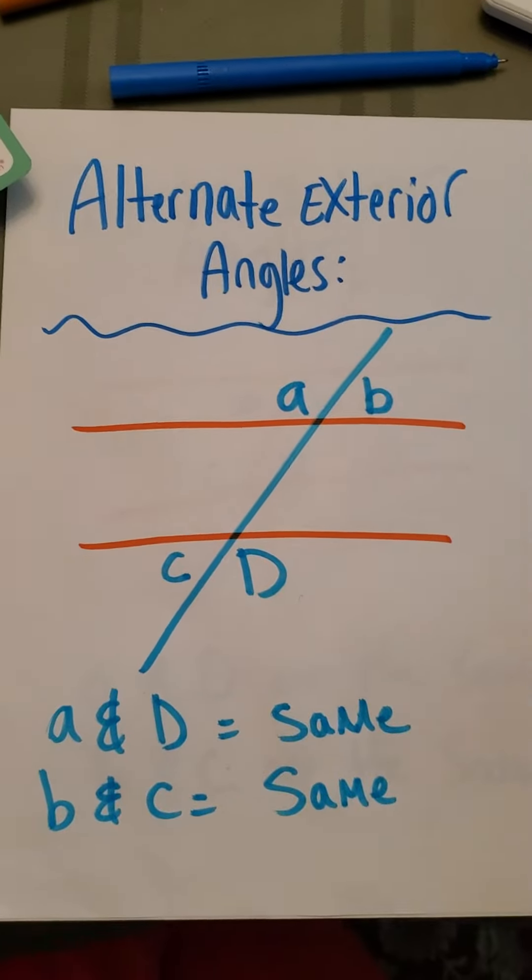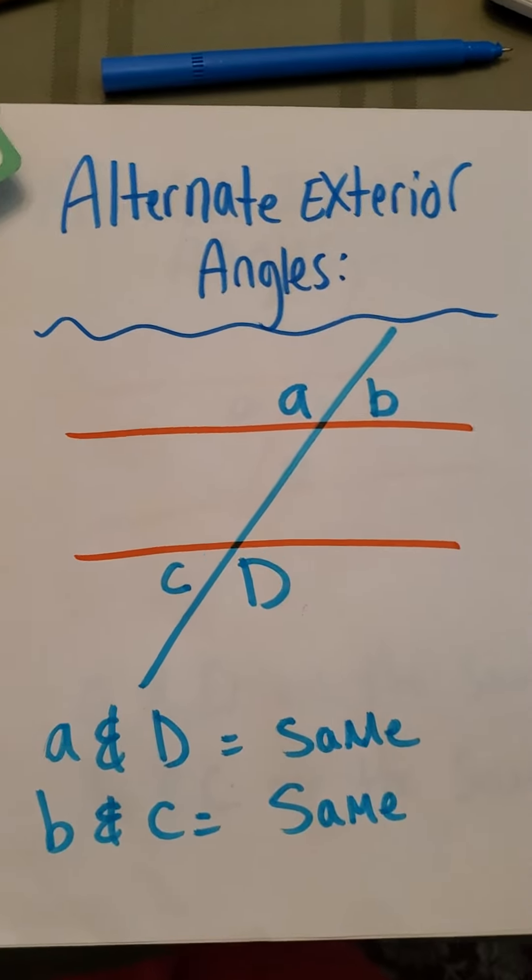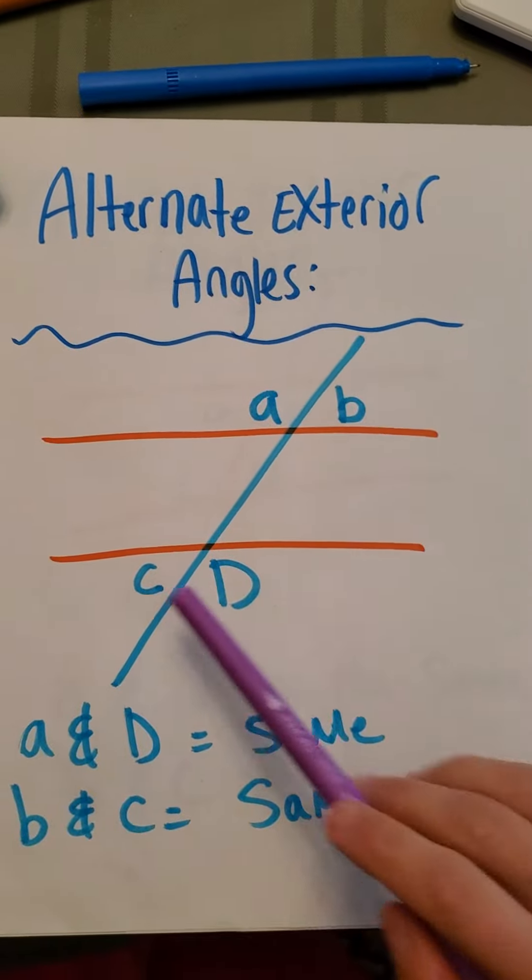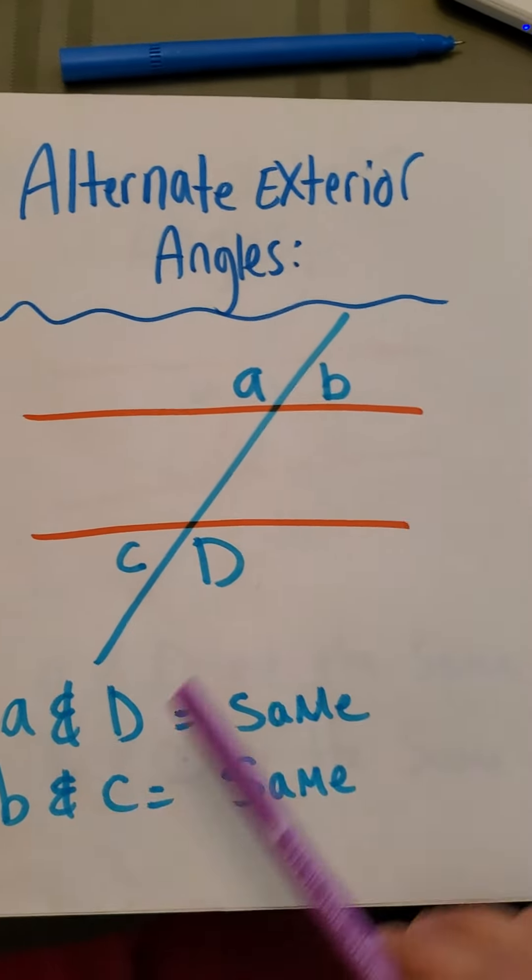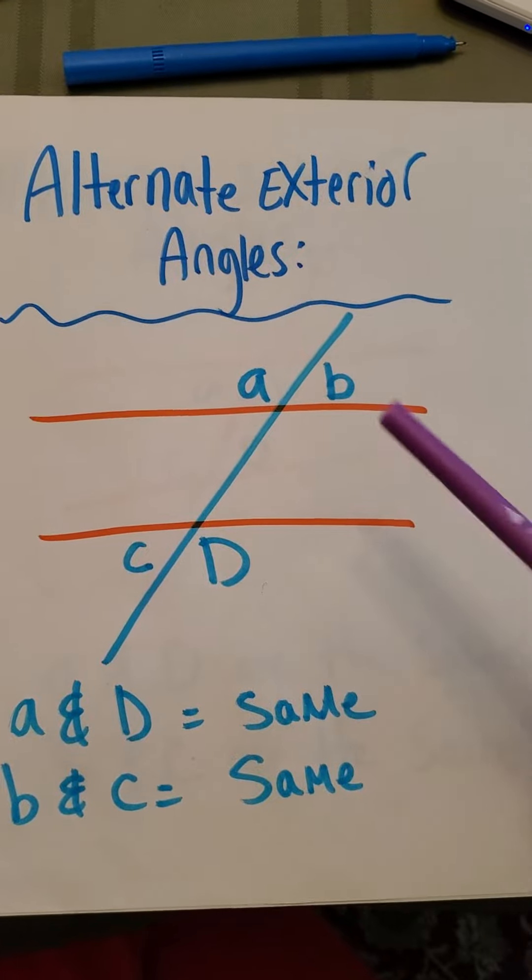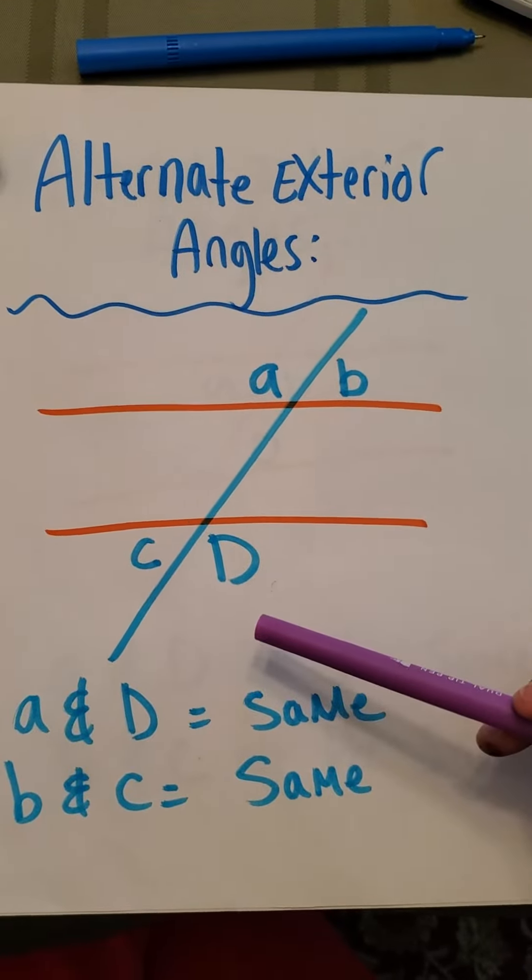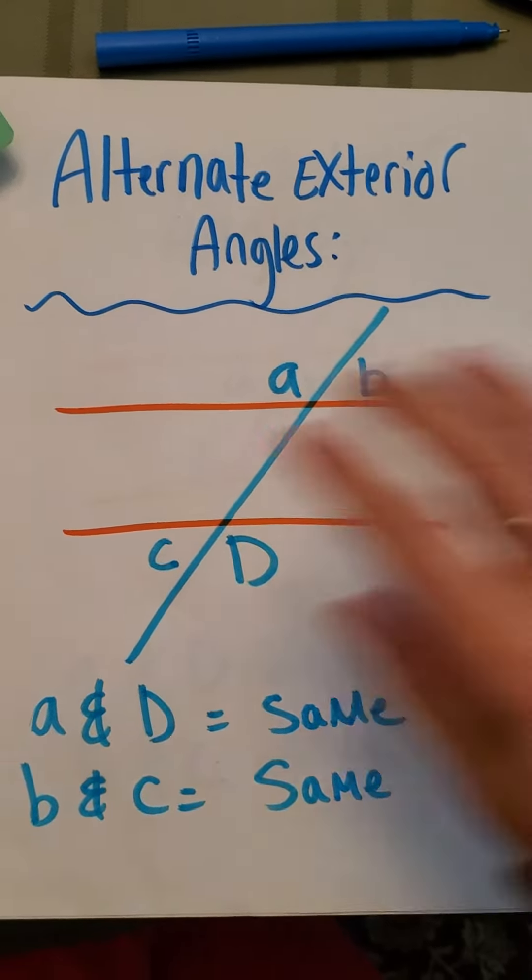Alternate exterior angles. So again, forgive me, my lines are not that straight. That's all good. A, B, C, D. Okay. So again, A and D, they're on the outside too, by the way. A and D are the same angles. B and C are the same angles.